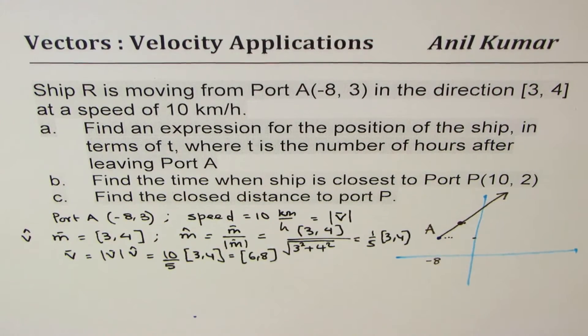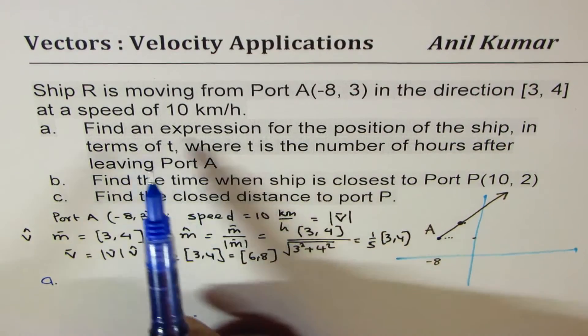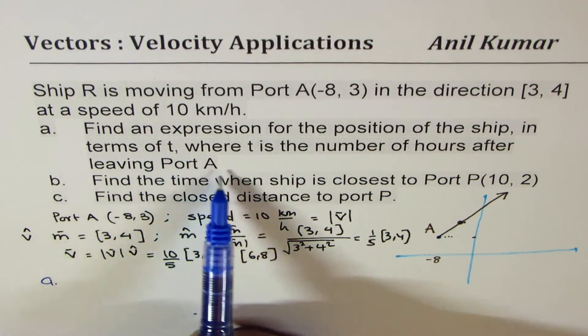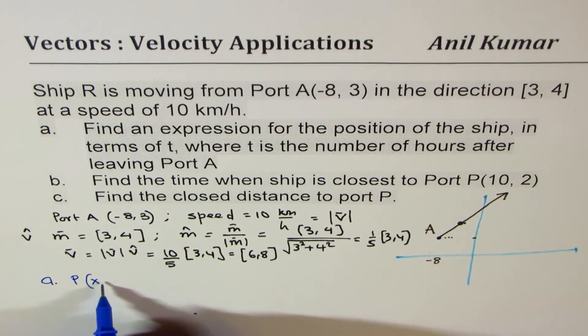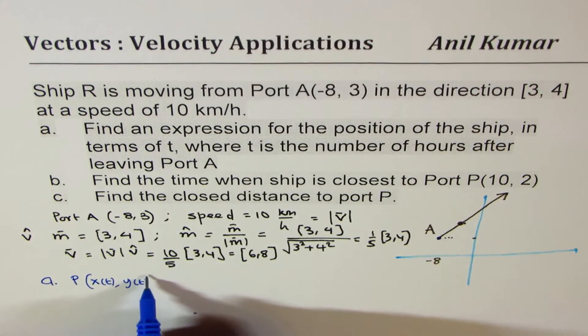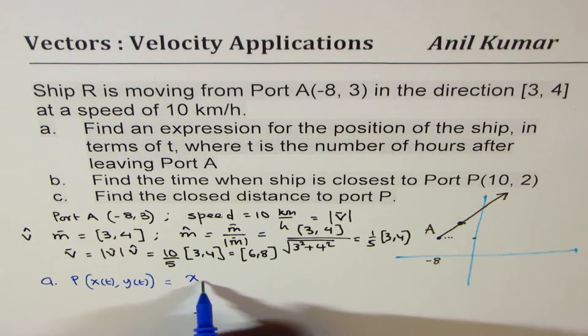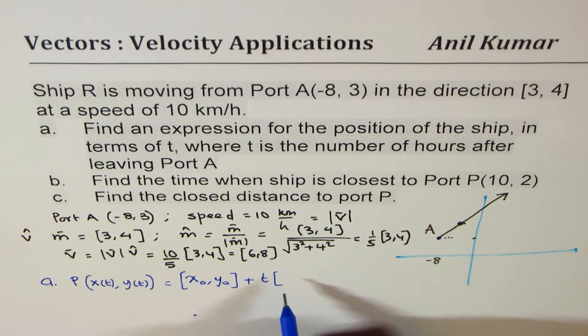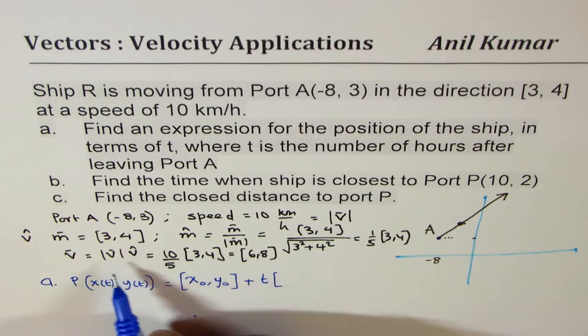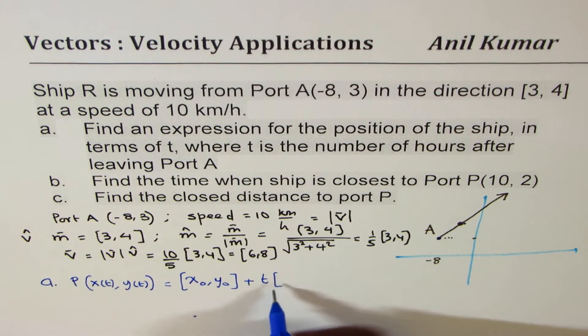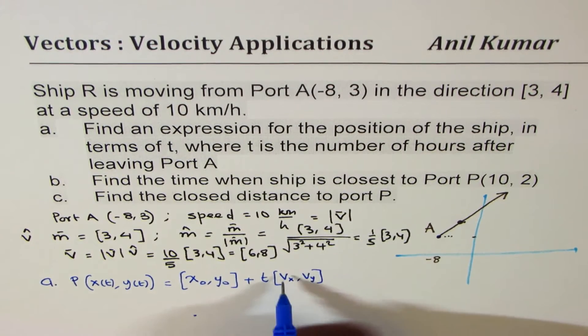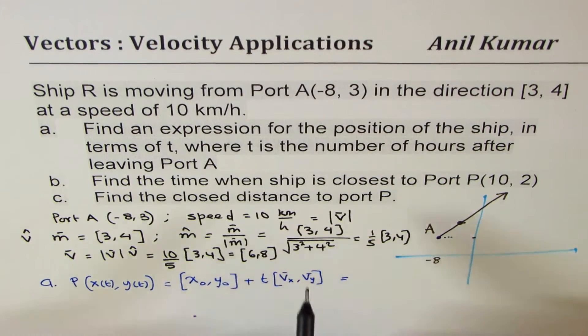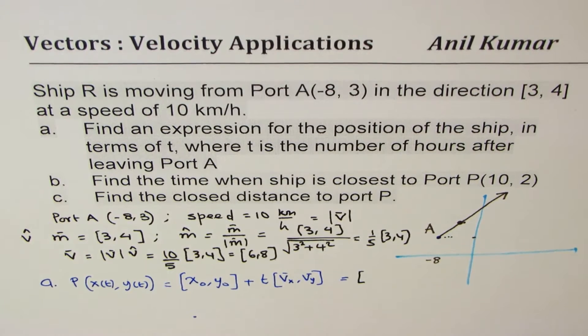Now, part A, let's try to answer part A. I hope it's simple now. Find an expression for position of the ship in terms of T, where T is the number of hours after leaving Port A. So this position in terms of X, which is a function of time, and Y, which is also a function of time, can be written as the initial position (X0, Y0) plus T times the velocity vector (VX, VY). So we could write our answer straight. Since we know the initial point here is (-8, 3), that is a position vector. So when we say position vector, we are relating it with origin. So that becomes the position vector, which is (-8, 3).